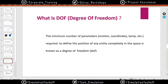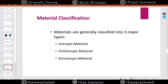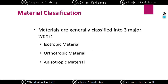We just covered degrees of freedom, and now we'll move on to material classification. We need knowledge of materials because when you do any analysis, you obviously need the help of materials. These are already covered in your subject called Strength of Materials. The general classifications of materials have three major categories: one is isotropic material, another is orthotropic material, and the last one is anisotropic material.